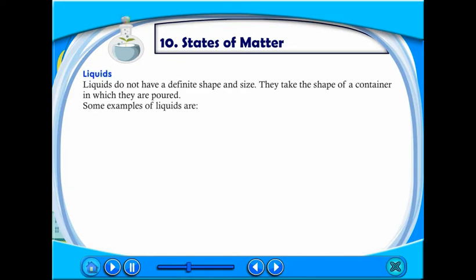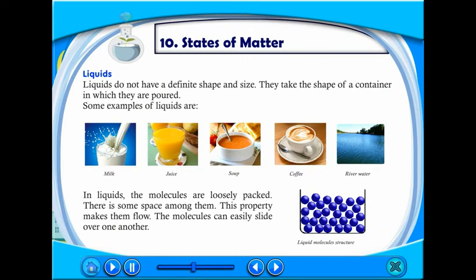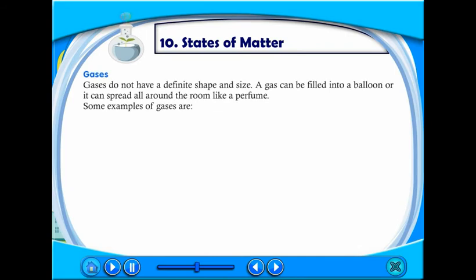Liquids do not have a definite shape or size. They take the shape of a container in which they are poured. Some examples of liquids are milk, juice, soup, coffee, river water. In liquids, the molecules are loosely packed. There is some space among them. This property makes them flow. The molecules can easily slide over one another.